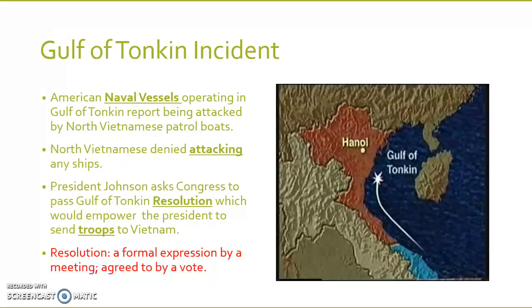Basically, it went down like this. There were American naval vessels operating in the Gulf of Tonkin, off the coast of North Vietnam, and they reported being attacked by North Vietnamese patrol boats. However, the North Vietnamese denied attacking any ships. In other words, the Americans said they were attacked, and the North Vietnamese said they didn't.